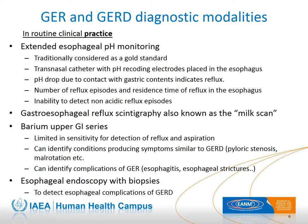Gastroesophageal reflux scintigraphy, also known as the milk scan, is a sensitive technique to detect gastroesophageal reflux. Barium upper GI series are also used but have limited sensitivity in detecting reflux and aspiration. They can identify conditions producing symptoms similar to gastroesophageal reflux disease, such as pyloric stenosis or gut malrotation, and can also identify complications of reflux such as esophagitis and esophageal strictures.